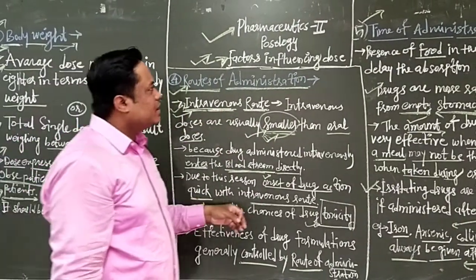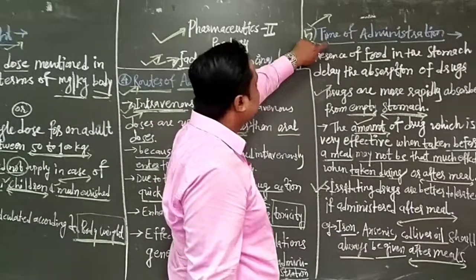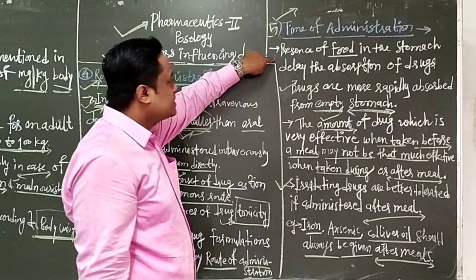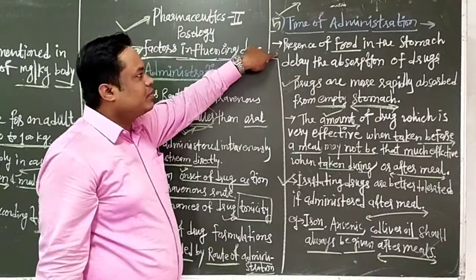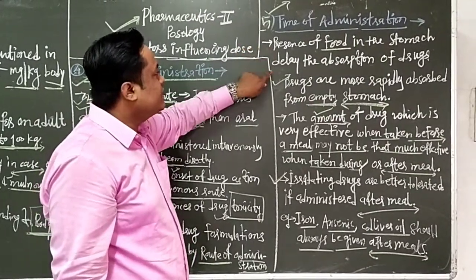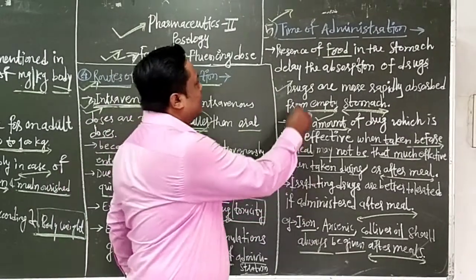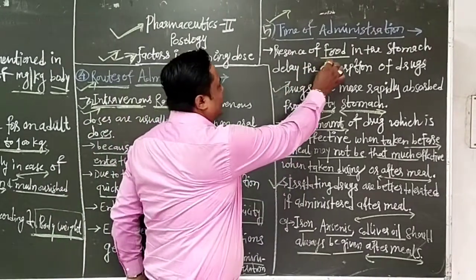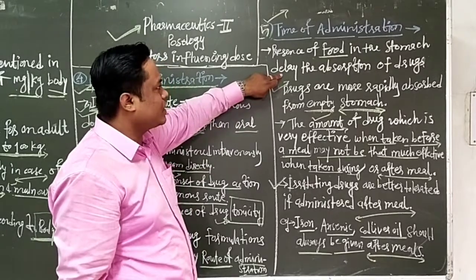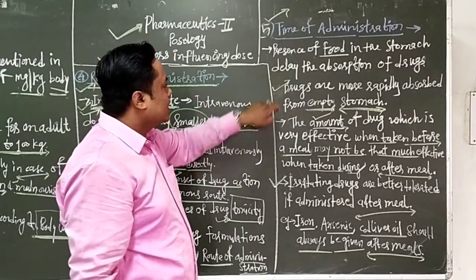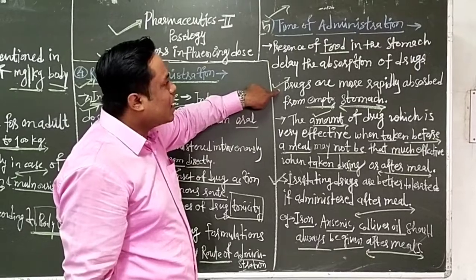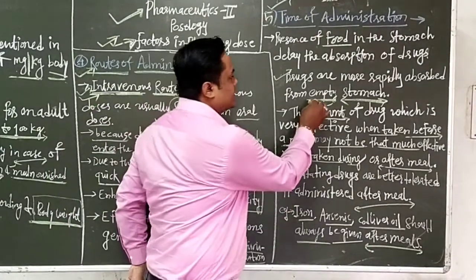The next factor is the time of administration — meaning whether the drug is given in the presence of food or without food, that is, on an empty stomach. The presence of food in the stomach delays the absorption of drugs. For example, certain drugs are more rapidly absorbed from an empty stomach.